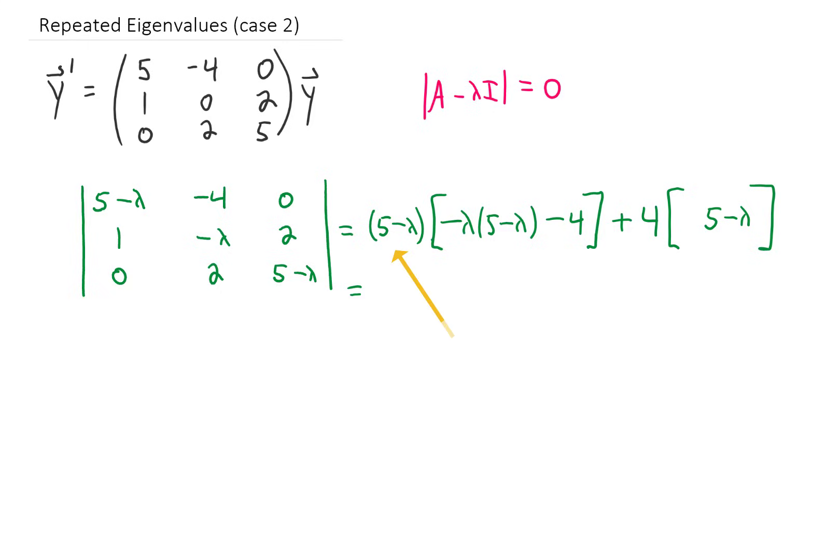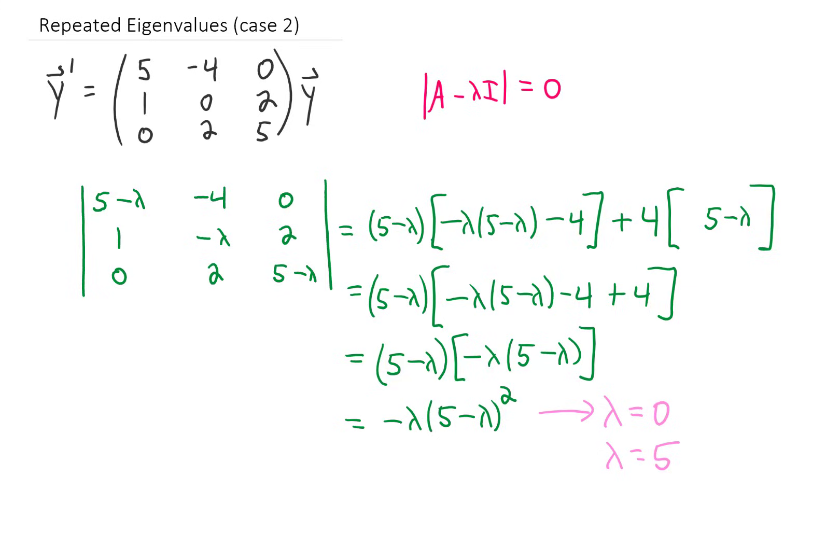You might have an instinct to multiply out this first bit, and while that's normally a good instinct, notice right away that there's a 5-λ on both of these terms. That suggests we can factor out 5-λ from this. If we factor that out from the first term and from the second term, we get a nice form that's kind of pre-factored. Now the -4 and the +4 cancel, and we just have three factors here. We have -λ times (5-λ)². That gives us an eigenvalue of zero and a repeated eigenvalue of five.